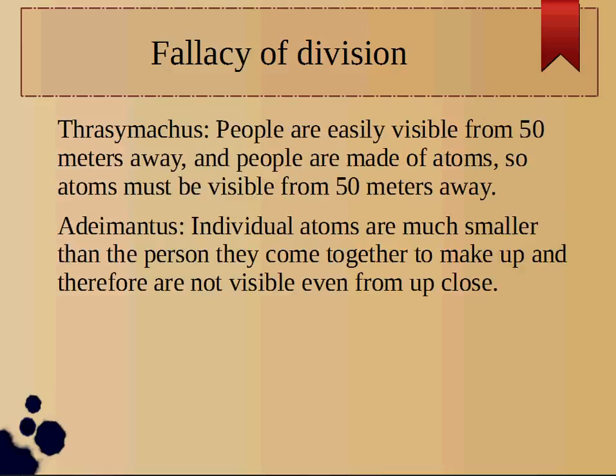In our second example, Thrasymachus notices that people are easily visible from 50 meters away. People are made of atoms, so atoms must be visible from 50 meters away. Adamantus, being the voice of reason, points out individual atoms are much smaller than the person they come together to make up, and therefore those individual atoms are not visible even from up close — there's no way to see them.